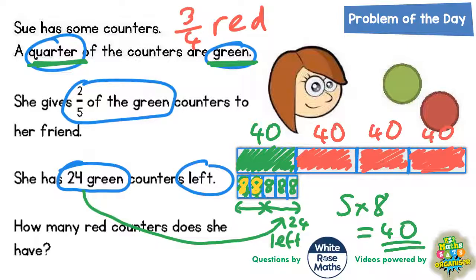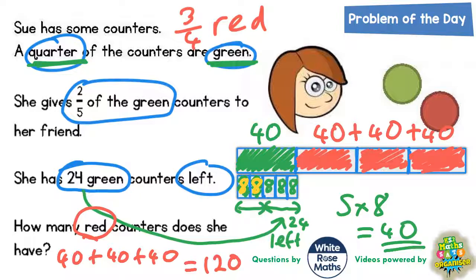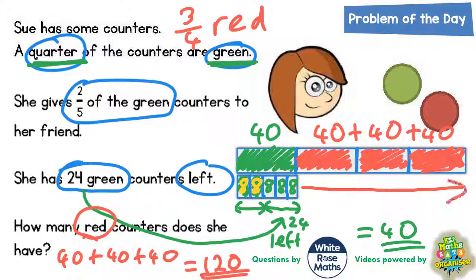So the final question says how many red counters does she have? We've got 40 plus another 40 plus another 40. And 40 plus 40 plus 40 is 3 lots of 40. 3 lots of 40 is 120. So she would have 120 red counters at the start. Which we could just write on here like so. 3 lots of 40 is 120 red counters.